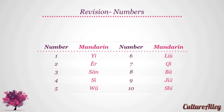1 translates to yi. 2 becomes er. 3 is san. 4 will be si. 5 is wu. 6 is translated as liu. 7 becomes qi. 8 will be ba. 9 is jiu. And finally, ten translates to shi.